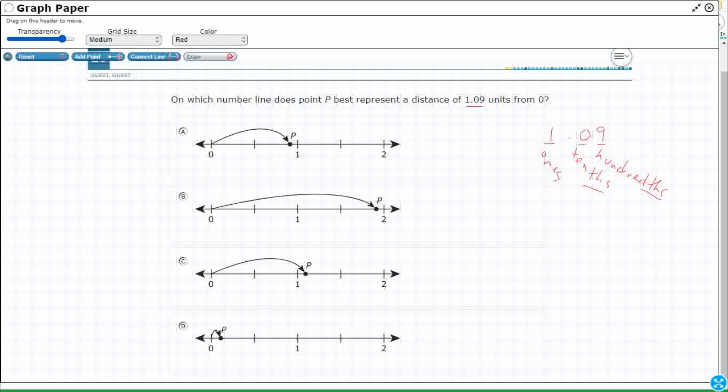So we could also look at it like this. If we wanted to put it in fraction form, we could write a mixed number like this: 1 and 9/100. So it takes 100 to get a whole, which means this 1.09 is not even close to getting up to 2.